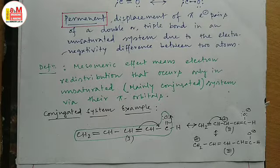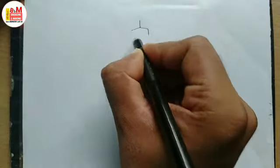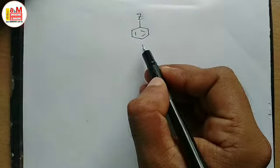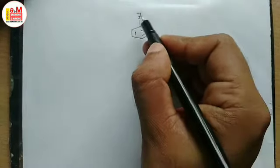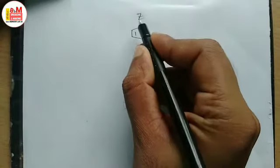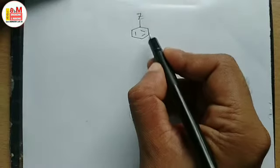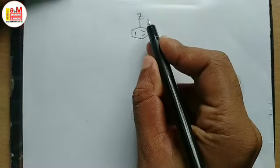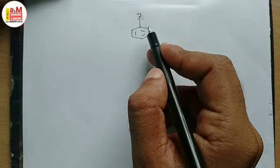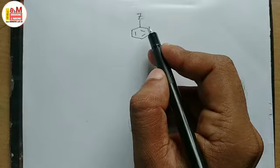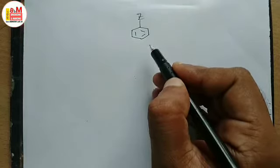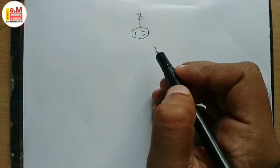Now let us talk about the generalization of mesomeric effect. Say we have a benzene system in which one of the hydrogens is replaced by atom Z. If in the presence of Z the electron density in this benzene ring increases, then it is said that the Z atom or group has plus M effect — that is, electron donating, or pi electron donating effect. And if in the presence of Z the electron density over this benzene ring decreases, then it is believed that the Z atom or group has minus M effect, or pi electron withdrawing effect.